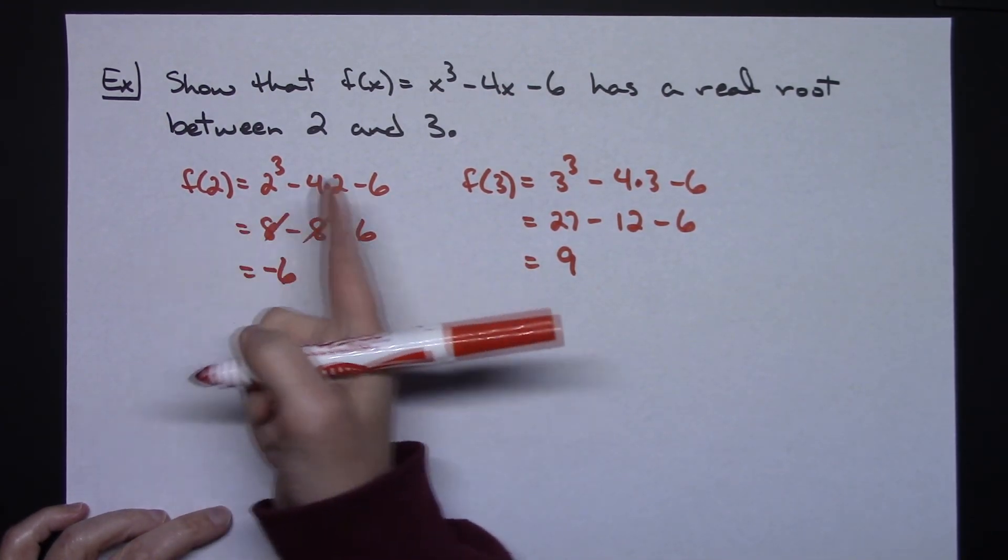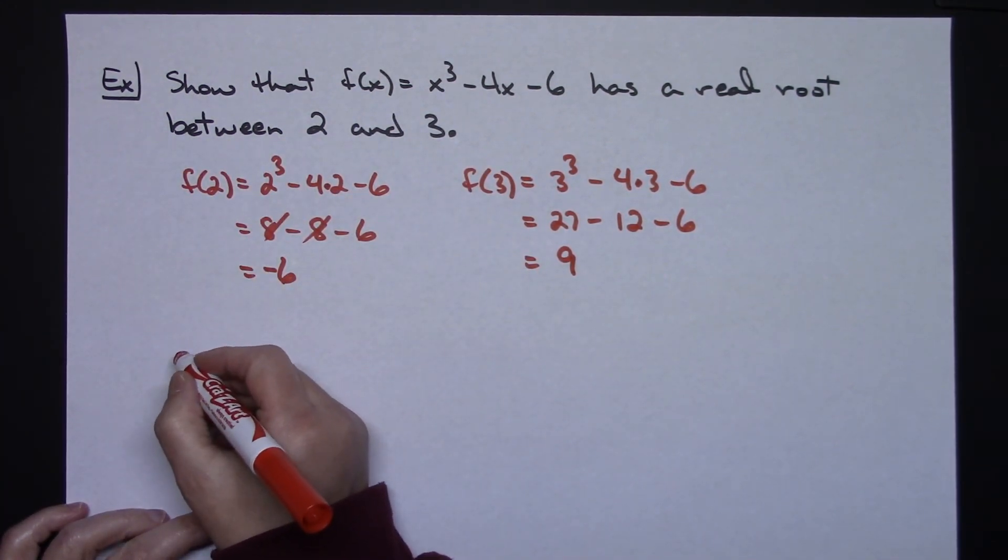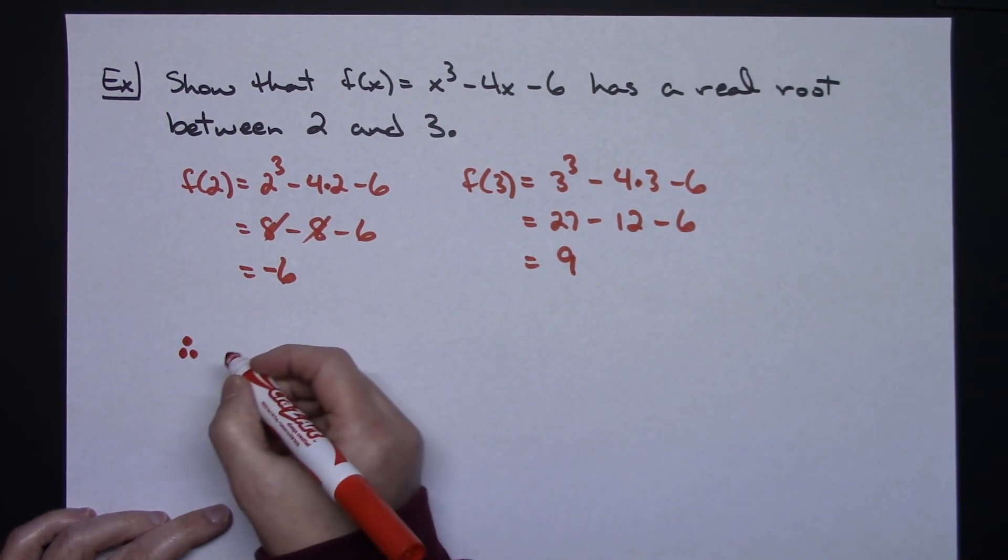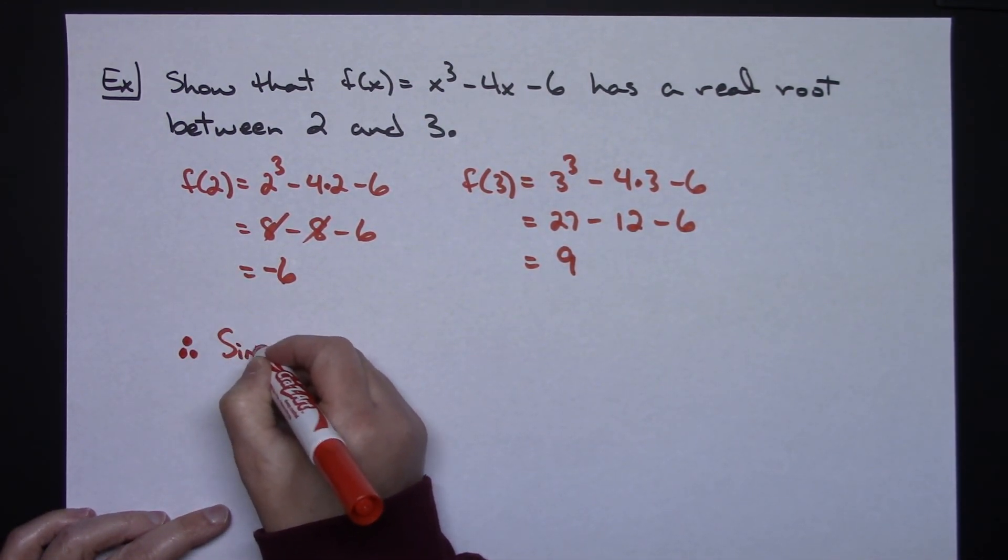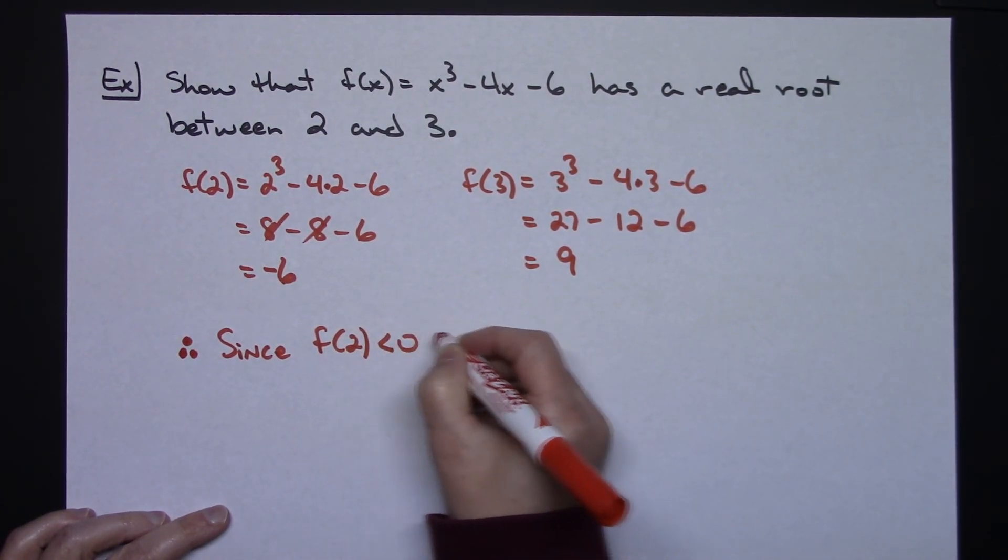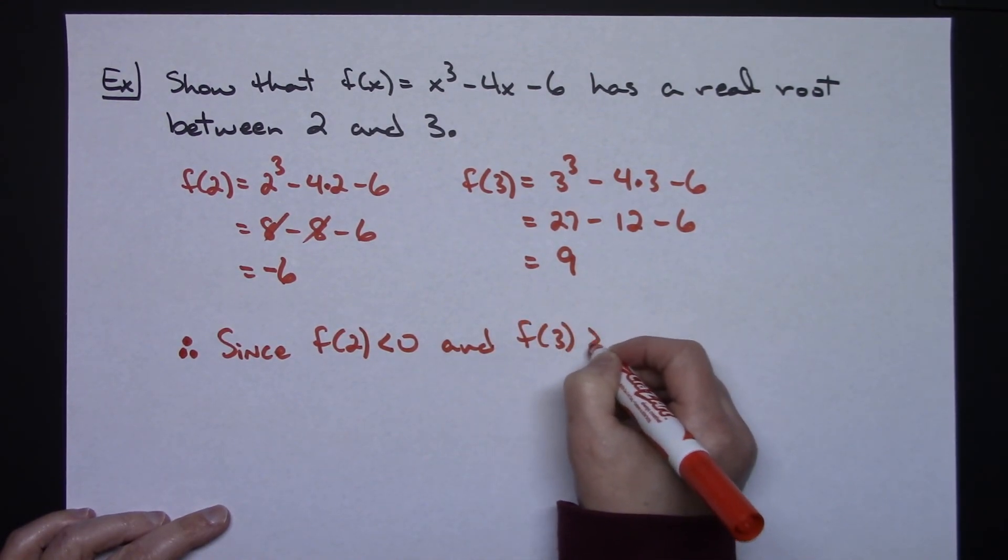So since they're asking you to show this—they might say prove, verify, show—you might want to write a therefore statement to make it a little bit more mathematically sound here. So I could say: Therefore, since F of 2 is less than zero and F of 3 is greater than zero...